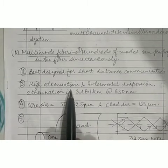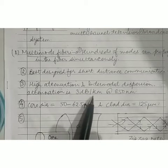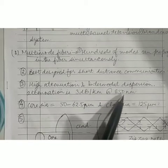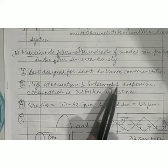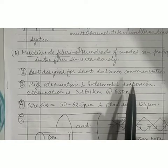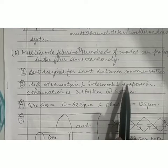The reason multimode fibers are used for short distance communication is that the attenuation value is very high — around 3 dB per kilometer at a wavelength of 850 nanometers, which is quite high compared to single mode fiber. Also, the intermodal dispersion in multimode fibers is also high.